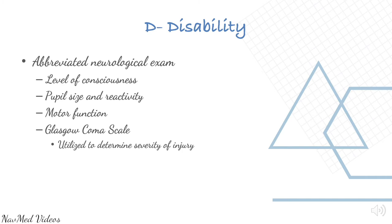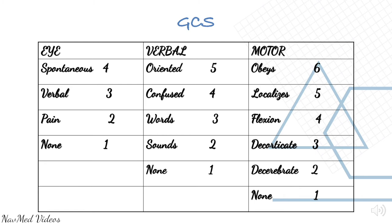The Glasgow Coma Scale is very important — we have a separate video on it as well. GCS is measured from eye, verbal, and motor response, each graded into different categories with numeric scores. Eye opening: spontaneous, to verbal, to pain, or none — scored 4, 3, 2, 1. Verbal responses: oriented, confused, inappropriate words, sounds, or none — scored 5, 4, 3, 2, 1. Motor responses: obeys commands, localizes, flexion, decorticate, decerebrate, or none — scored 6 to 1. The total GCS score is 15 and the minimum is 3, because eye, verbal, and motor all have a minimum score of 1 each.